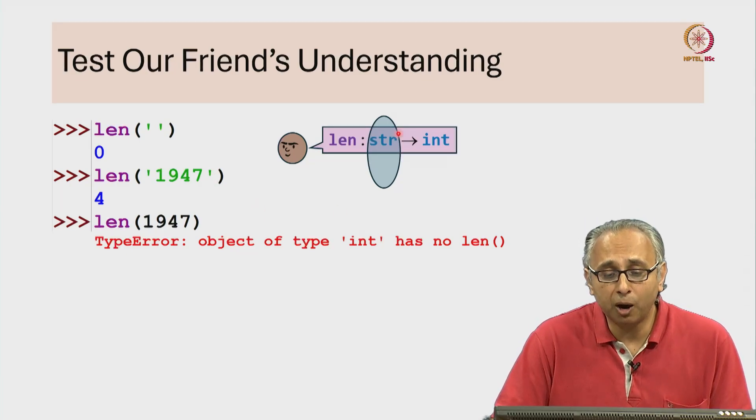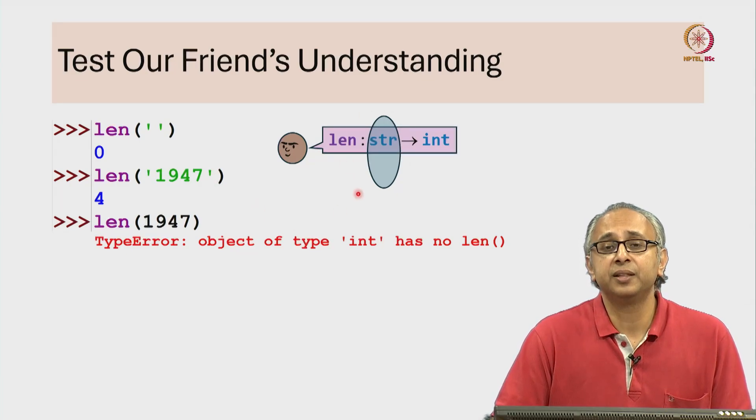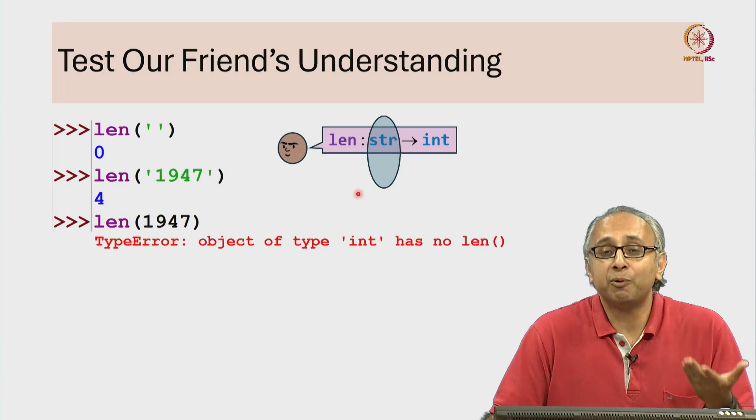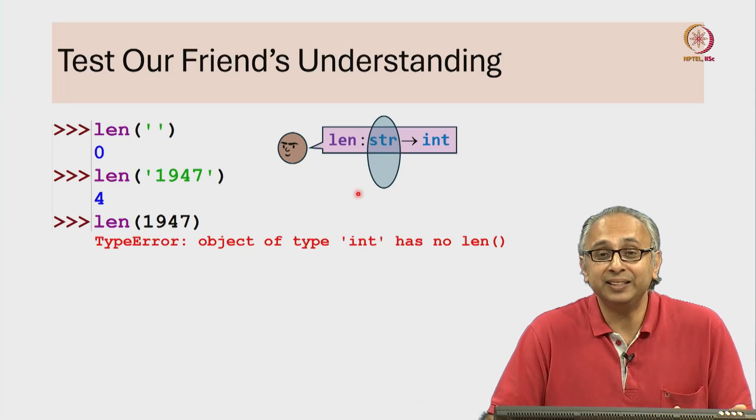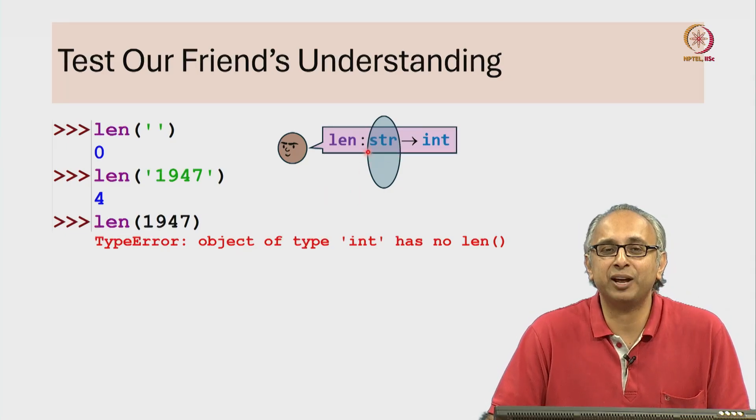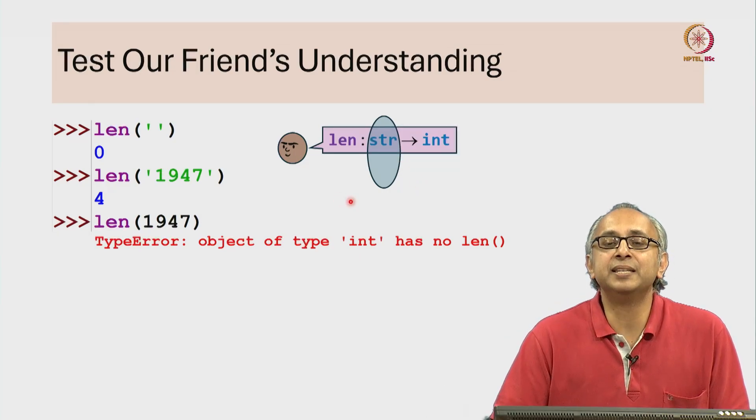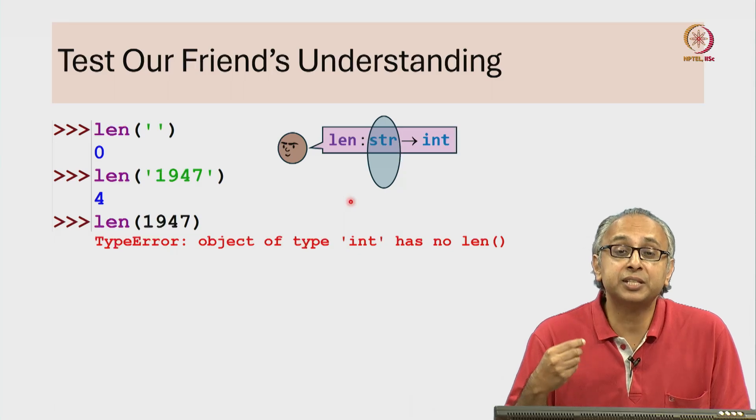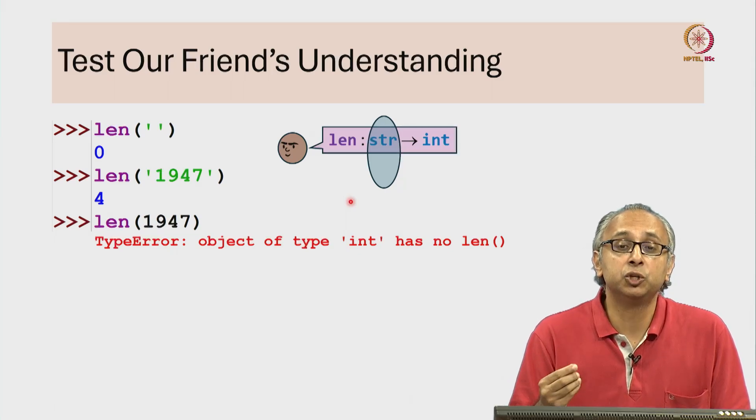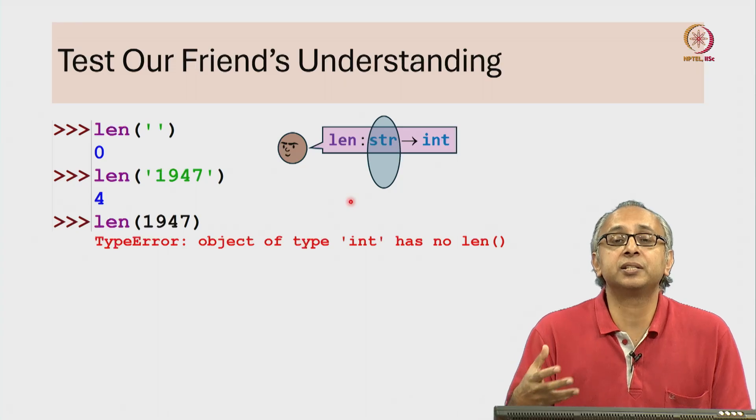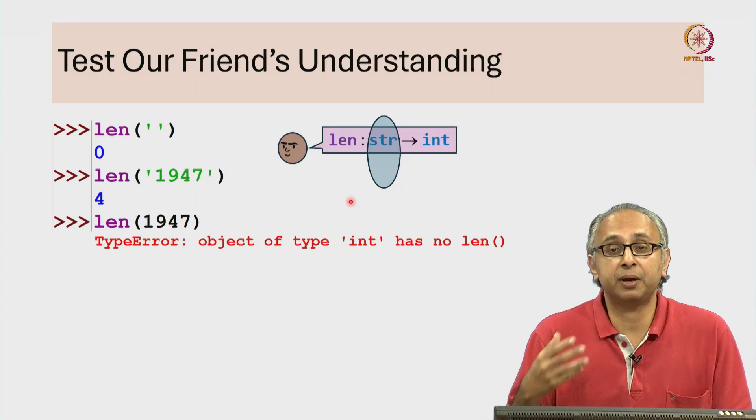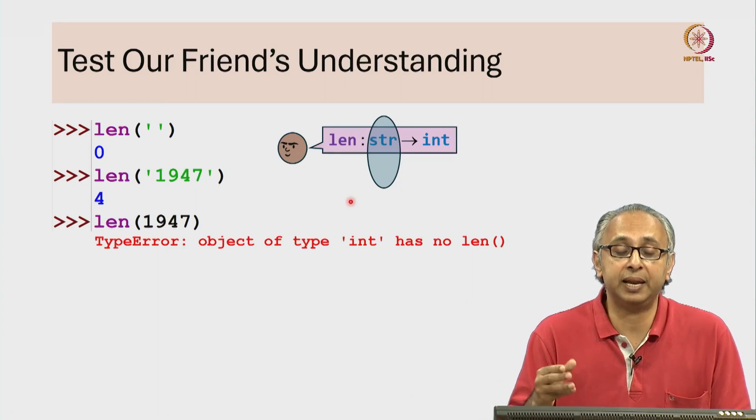However, it can also operate on other things that are not strings. Our friend has not yet seen that, so it is not surprising that our friend made this small mistake. But technically, this statement is incorrect because the set of legal inputs to the len function are more than just strings. There are other things for which we can compute the length.